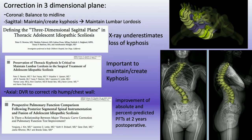In correcting in three dimensions, we correct in the coronal plane and balance the trunk to midline. In the sagittal plane, it's very important to maintain and create kyphosis. Most AIS scoliosis is a lordoscoliosis — there is hypokyphosis. So we're really trying to create more kyphosis, and that's going to create a compensatory increase in lumbar lordosis, even though we're not fusing that portion.